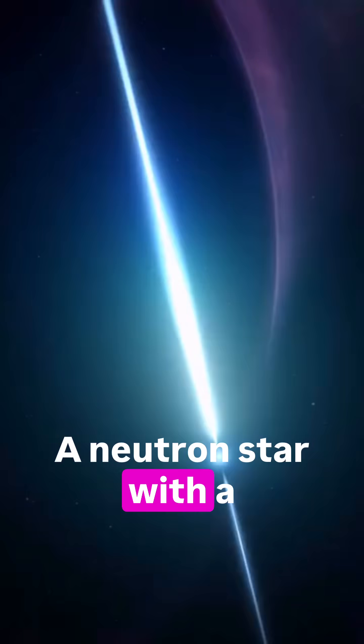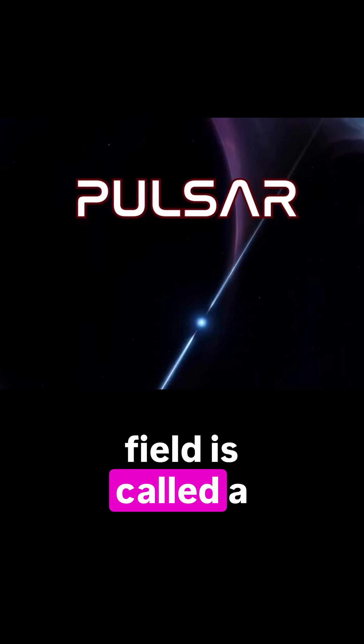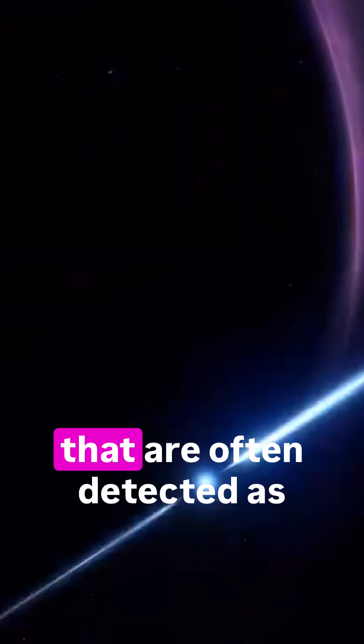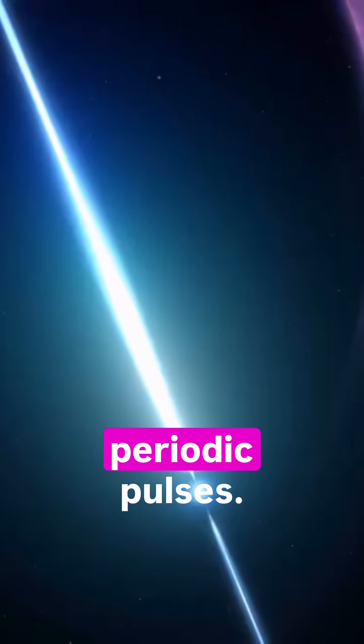A neutron star with a powerful magnetic field is called a pulsar, and pulsars are potent sources of electromagnetic radiation that are often detected as periodic pulses.